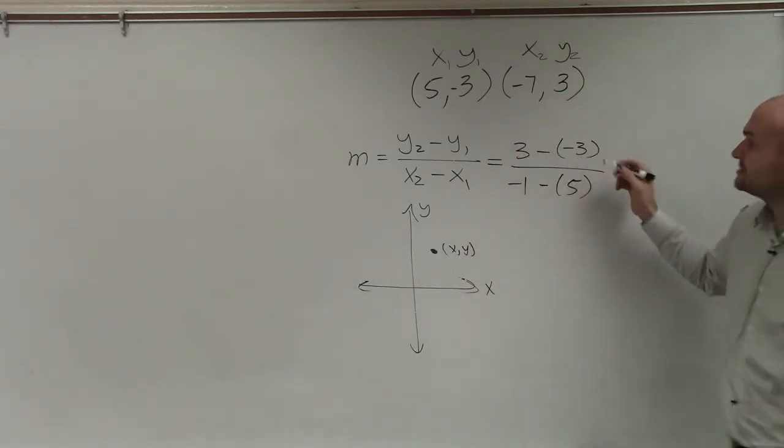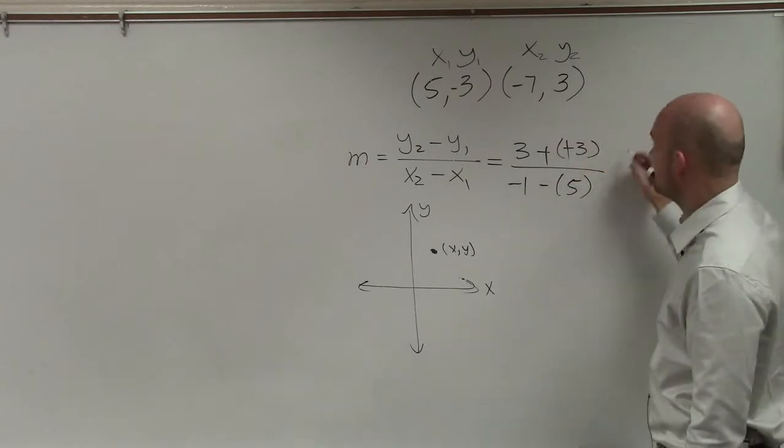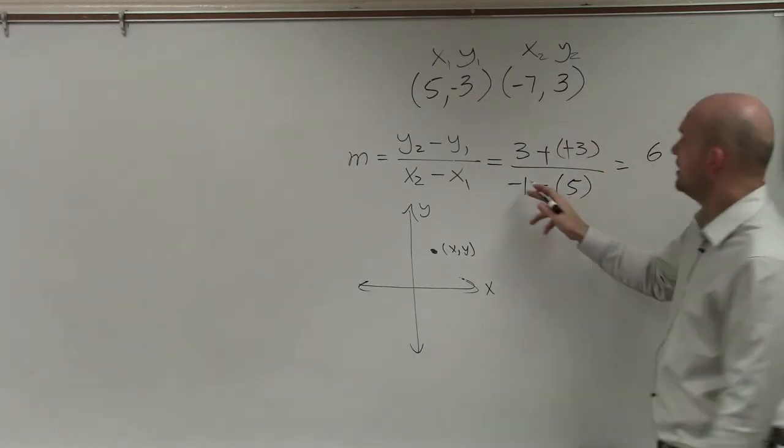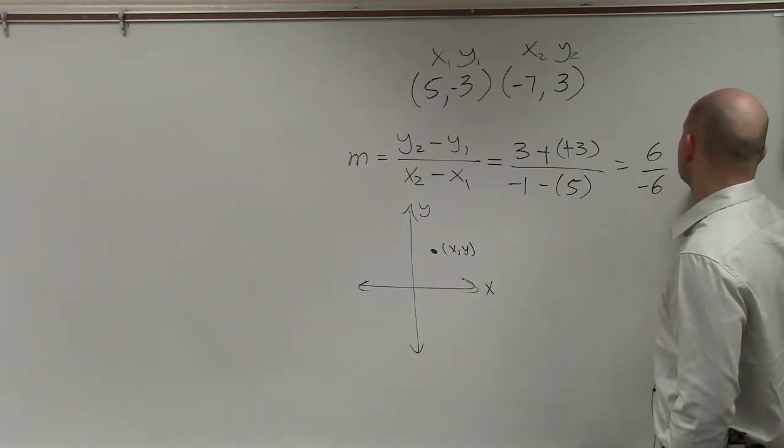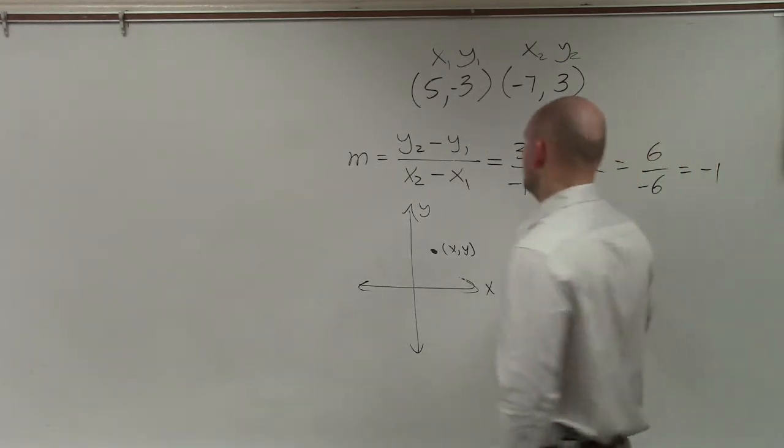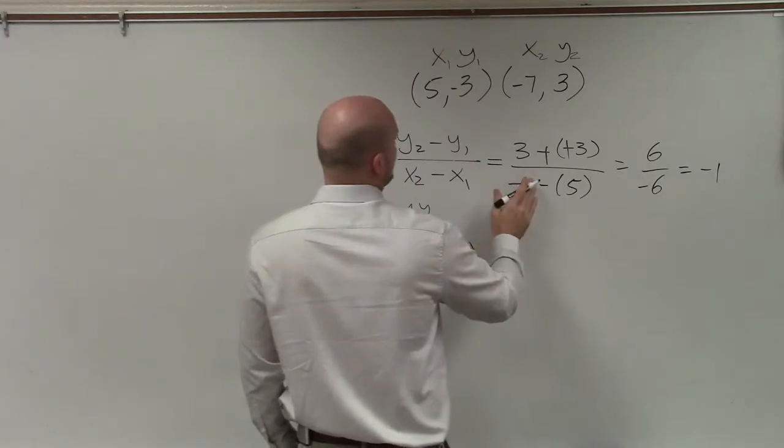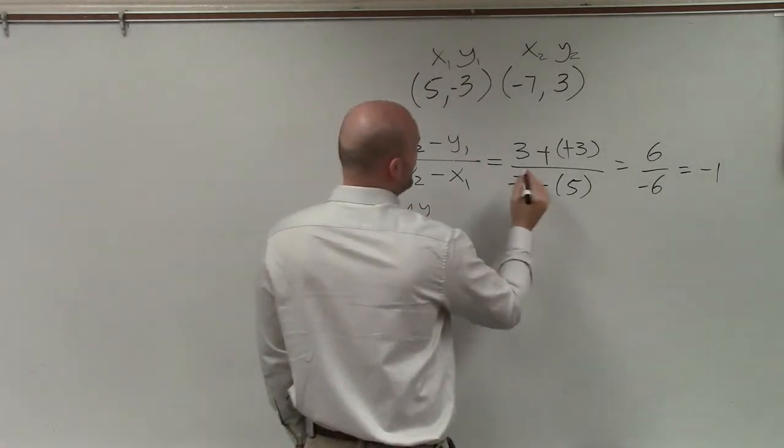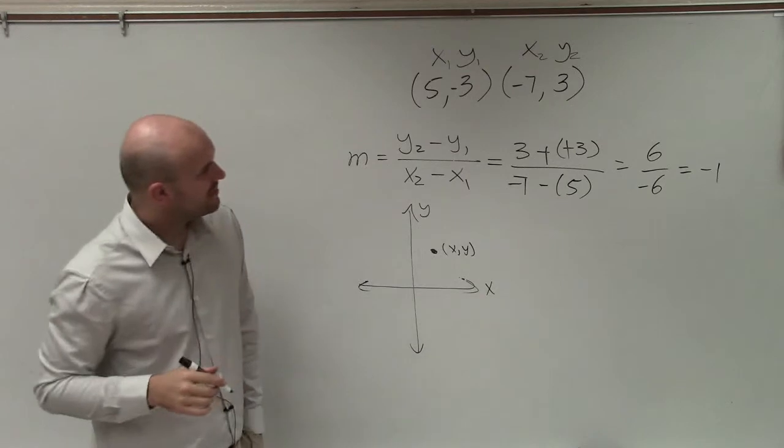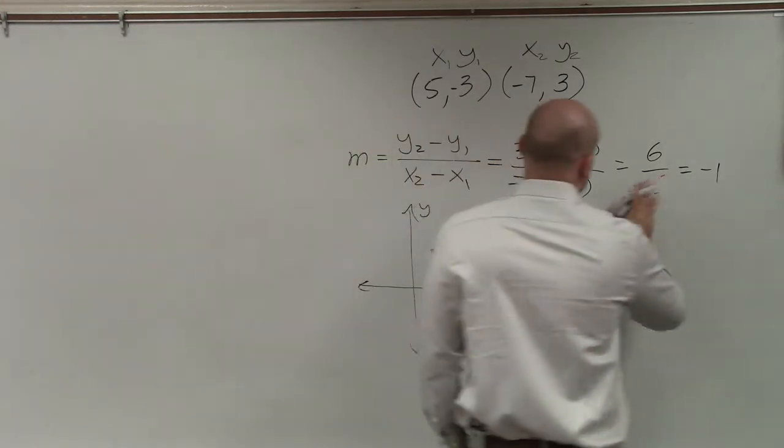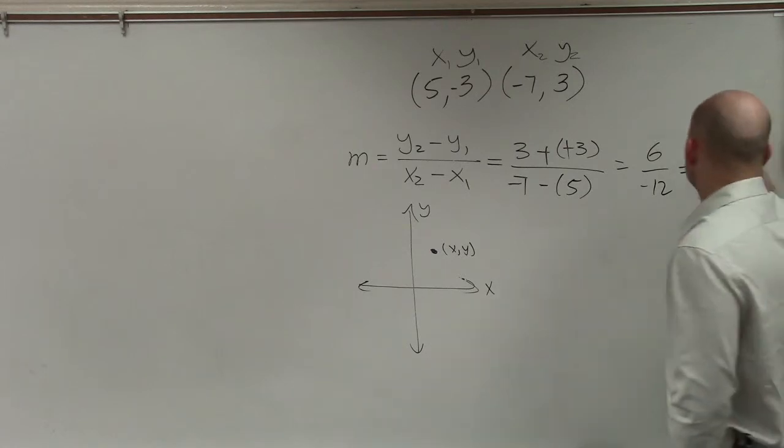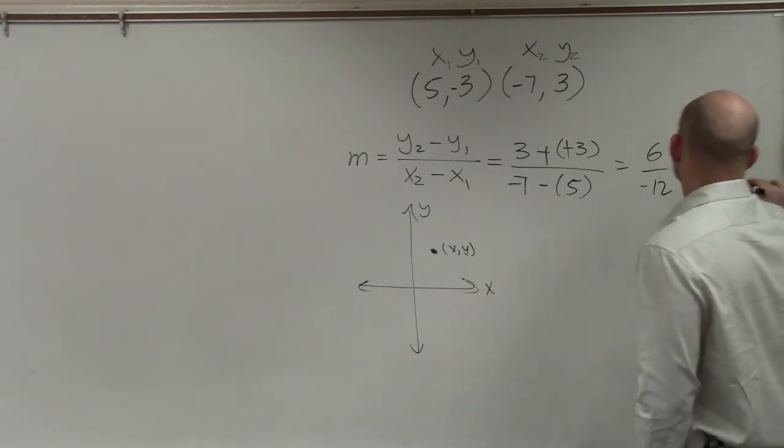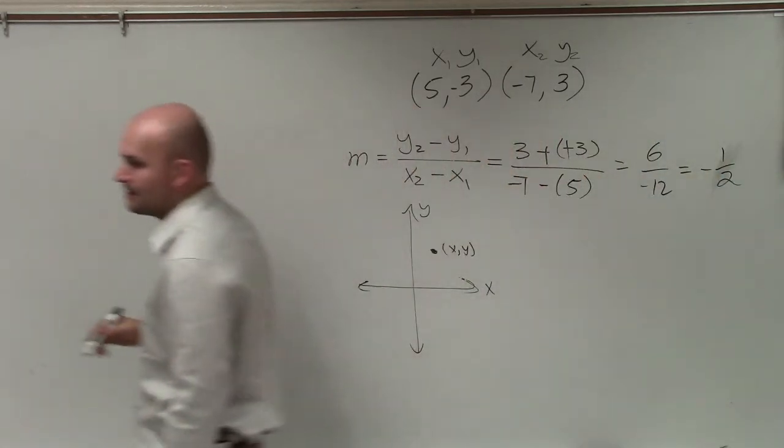So 3 minus a negative, that turns positive. That becomes 6. And negative 1 minus 5 is negative 6. Where do I put? Oh, x. Why did I get 1? I don't know. So negative 7 minus 5 is going to be a negative 12. So that becomes a negative 1 half is your slope.